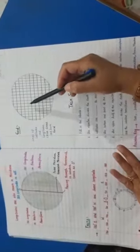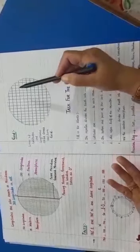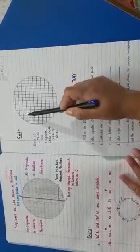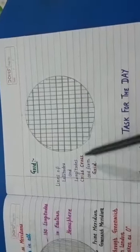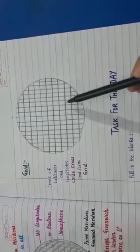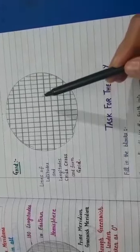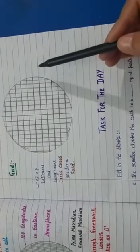Here is a grid. You can see here is a network of latitudes and longitudes. When lines of latitudes and lines of longitudes crisscross, they form a grid. This is called a grid and this helps in locating places.